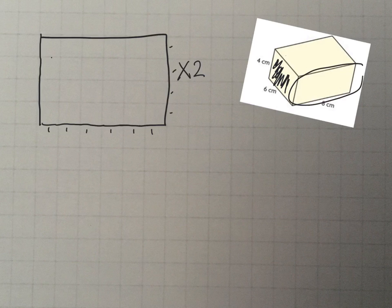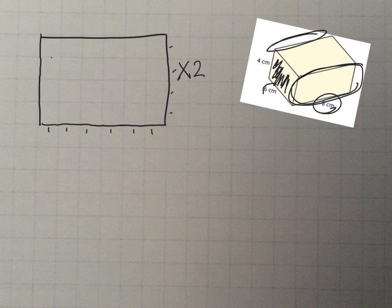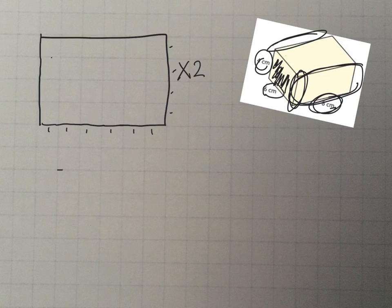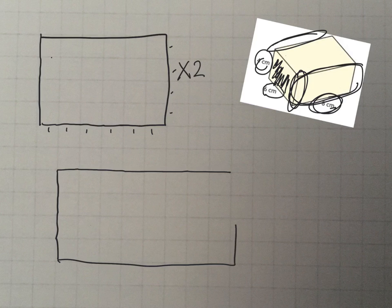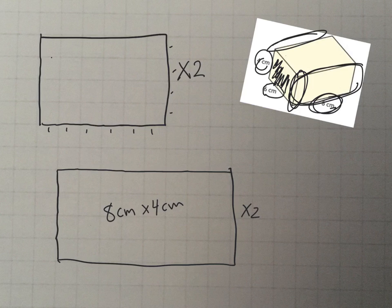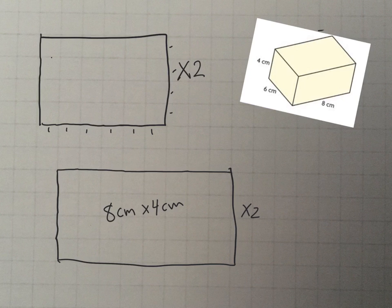Now let's do this next side. Again, there's one on this side and one on the other side just like it. This one is 8 centimeters by the height, which is 4 centimeters. So we go over 8 and down 4, and connect them. This face is 8 centimeters by 4 centimeters, and again there are going to be two of these.